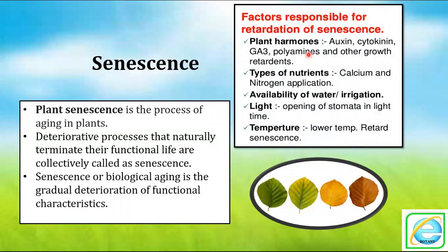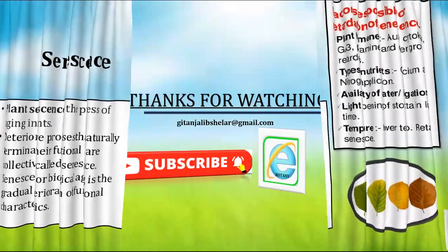Senescence can be retarded by some factors — plant hormones such as auxin, cytokinin, gibberellic acid, and polyamines are retardants. Some nutrients like calcium and nitrogen, when applied to plants, also retard senescence. A good supply of water and irrigation retards senescence. Good quality of light, opening of stomata during light, and lower temperatures also retard senescence. These are the factors responsible for retardation of senescence.